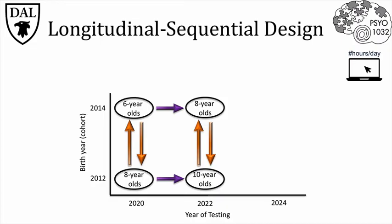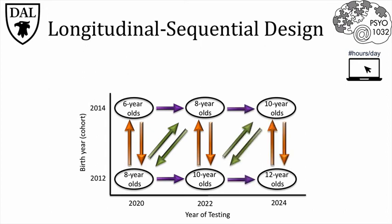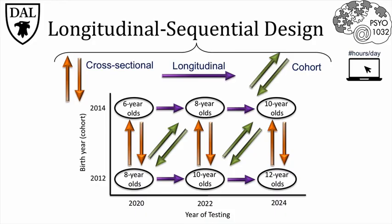Note we can also compare age cohorts born in different years. If we test again two years later, we have a group of ten-year-olds and twelve-year-olds, and we can make these three comparisons again. So this type of design is incredibly powerful since it can disentangle age-related changes from cohort differences. However, this research design is not used often because it's very time consuming, expensive, and with several groups followed over time, there is a great chance of attrition.